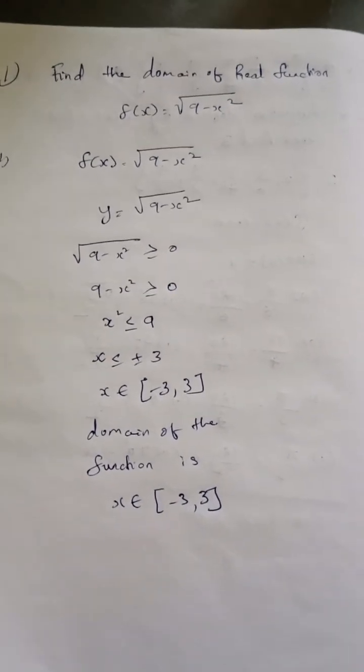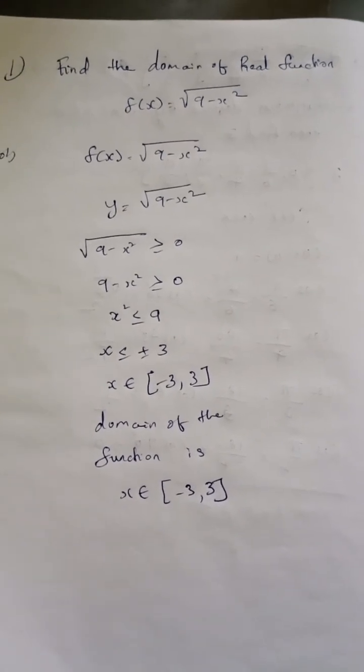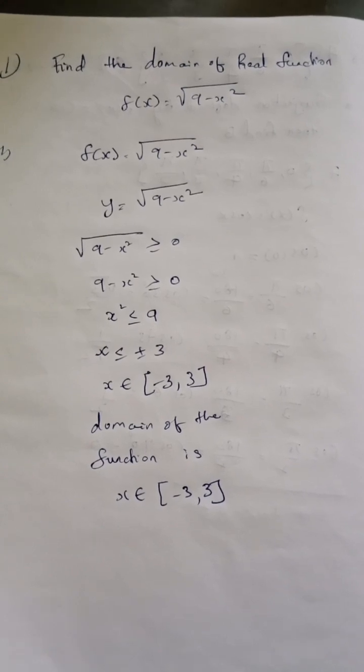The question is: find the domain of the real function f(x) equals square root of 9 minus x squared. In the question, f(x) is given as square root of 9 minus x squared.